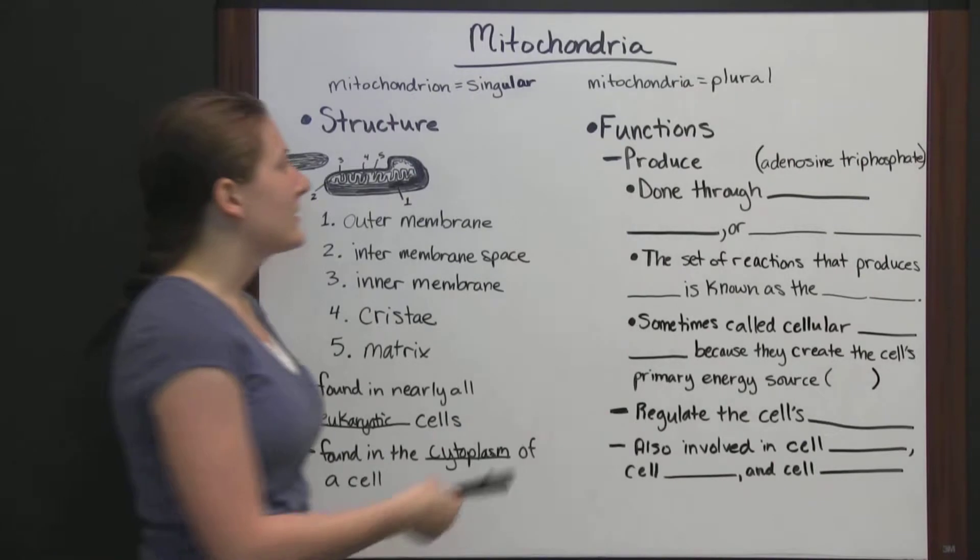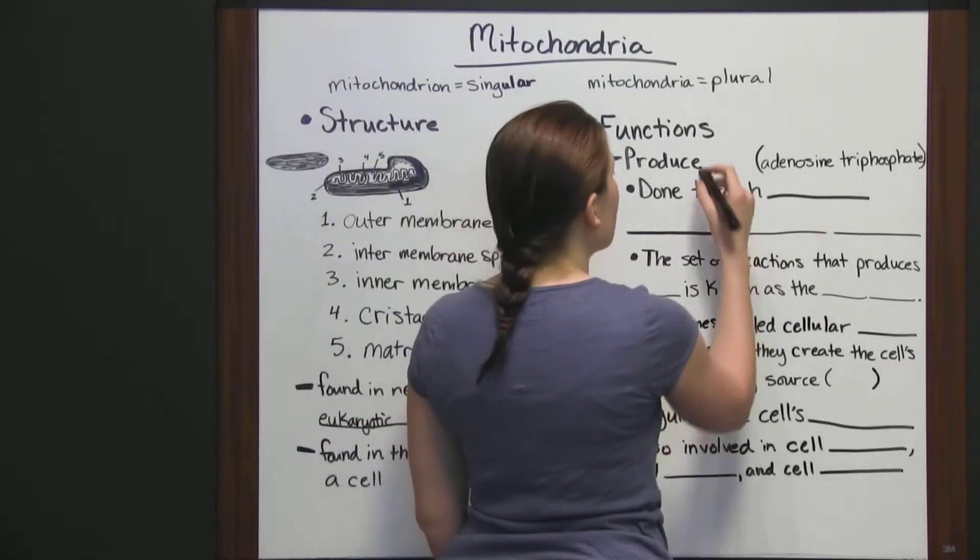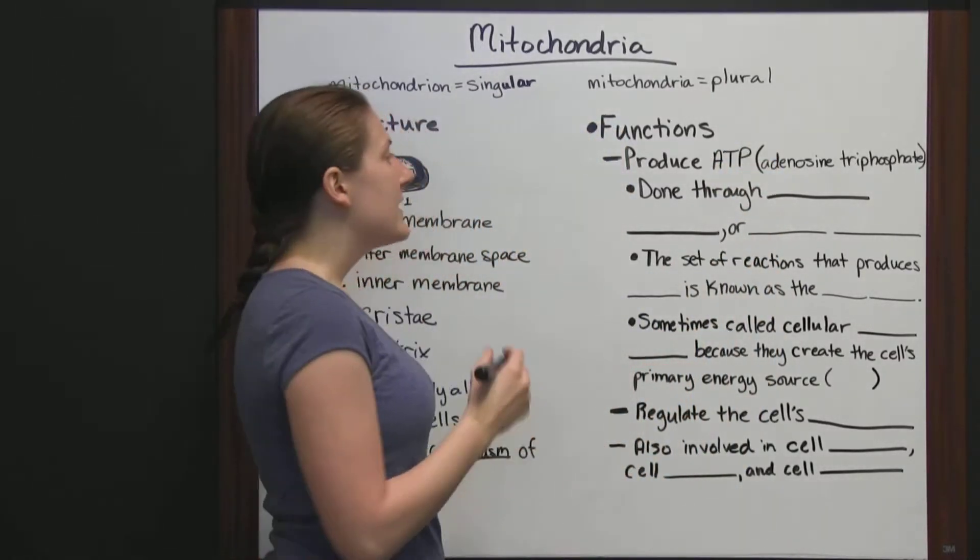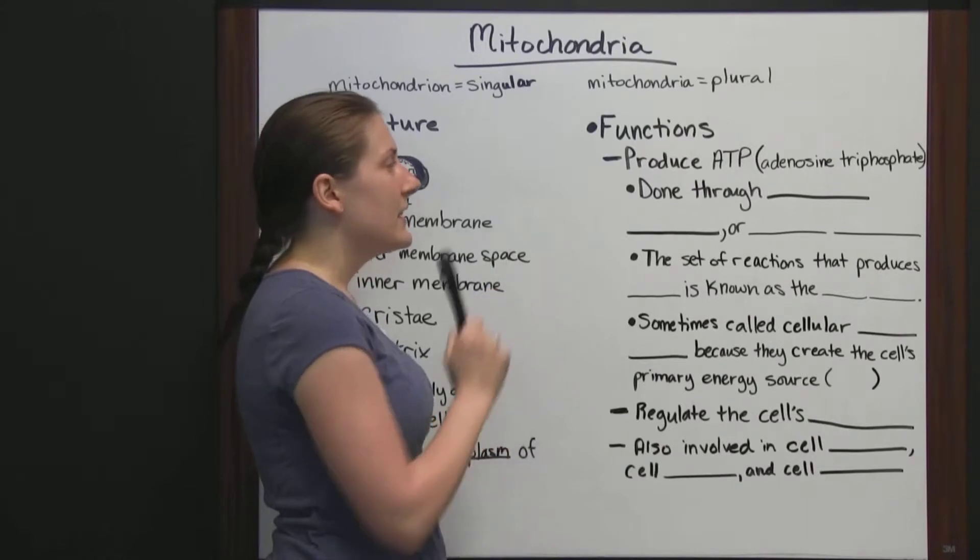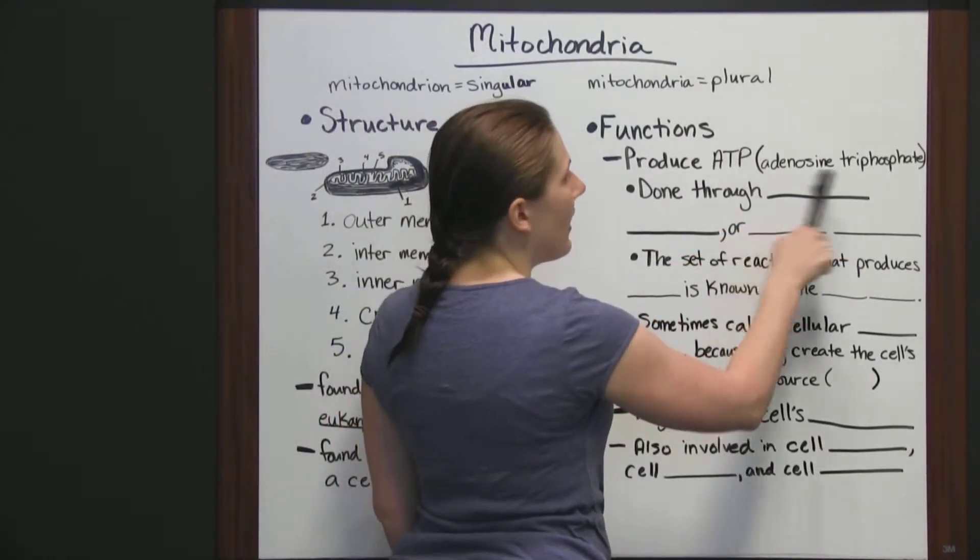Okay, let's look at the functions. Mitochondria produce adenosine triphosphate, which is known as ATP. So, if you see ATP, it's an energy source, and it's called adenosine triphosphate. But, a lot of times, this is not going to get all typed out.